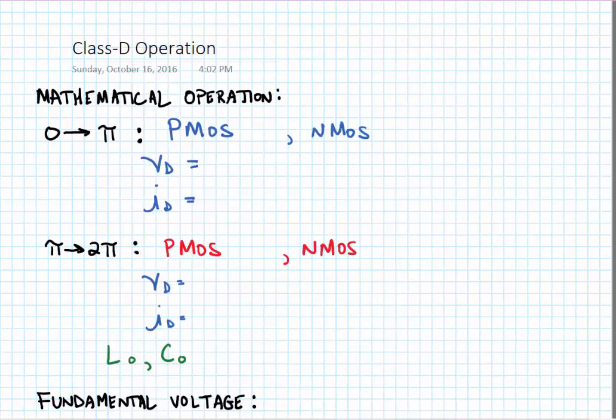So here we'll get a bit more formal with the definition of operation. So from zero to pi, we have that the PMOS is on, the NMOS is off, and we can write out expressions for the drain voltage and drain current as follows.